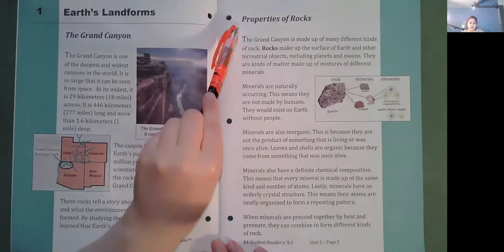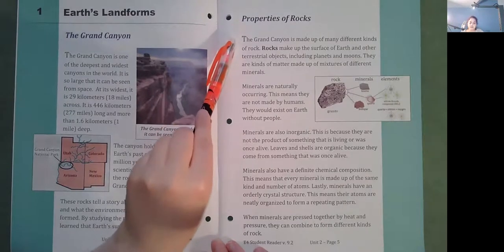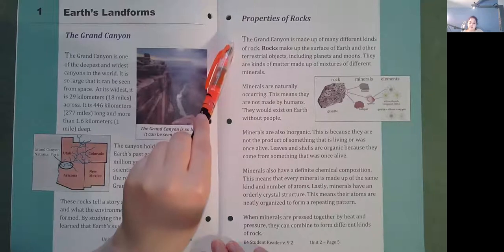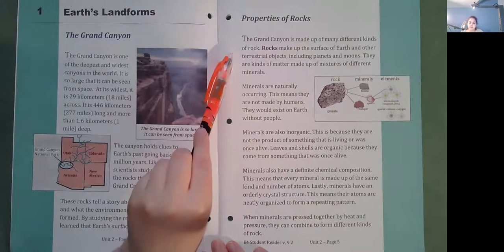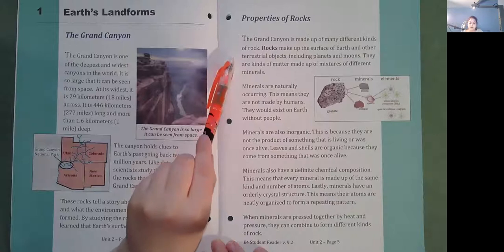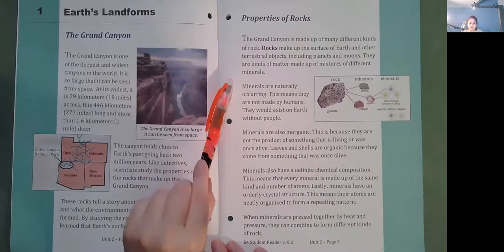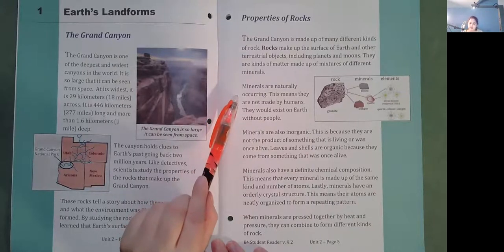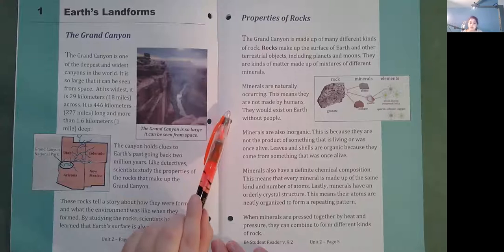Properties of rocks. The Grand Canyon is made up of many different kinds of rocks. Rocks make up the surface of Earth and other terrestrial objects, including planets and moons. They are kinds of matter made up of mixtures of different minerals. Minerals are naturally occurring. This means they are not made by humans. They would exist on Earth without people.